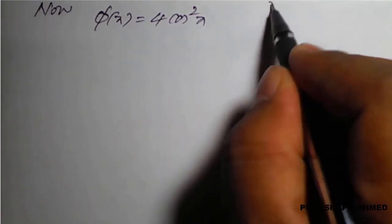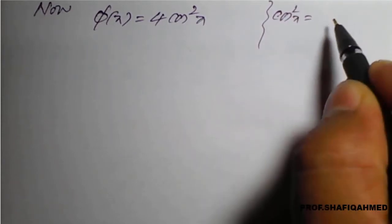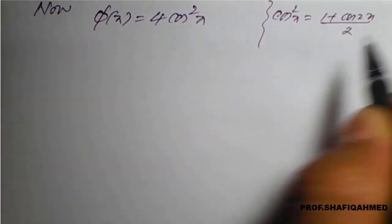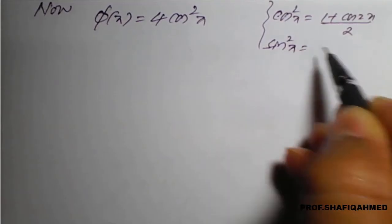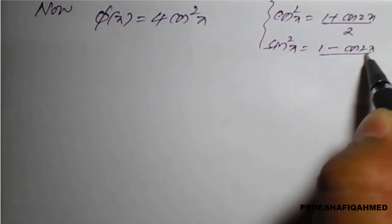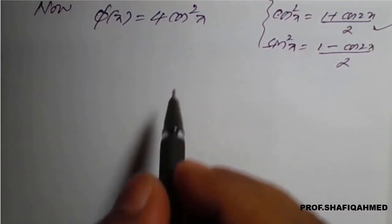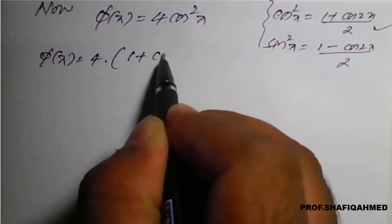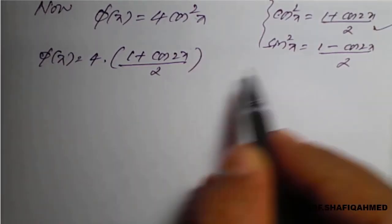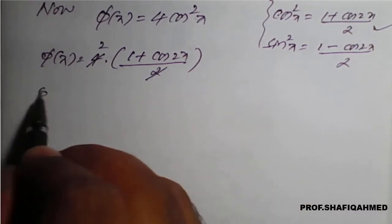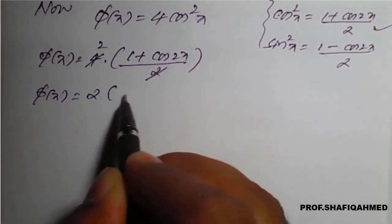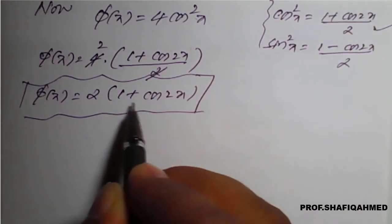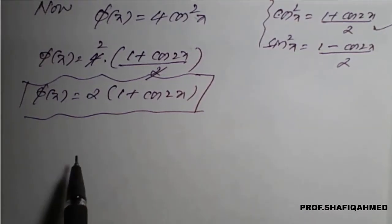For cos²x, we have to apply the trigonometric property. We know that cos²x = (1 + cos2x)/2. Similarly, sin²x = (1 - cos2x)/2. Since we have cos²x, we use this identity. Therefore, φ(x) = 4 × (1 + cos2x)/2 = 2(1 + cos2x). So our simplified φ(x) is 2(1 + cos2x).